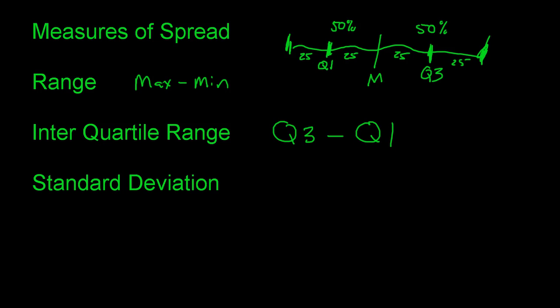For standard deviation, the formula isn't worth memorizing — you'll usually be given it or use your calculator. The symbols are S for the standard deviation of a sample, and sigma for the standard deviation of a population. Think of standard deviation as how far a typical point is from the mean — not exactly the average distance, but close to that idea.